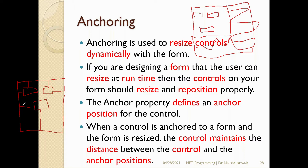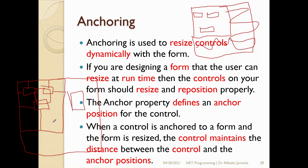Now the controls will not shift from their anchored positions. Each control is anchored on a specific edge: the label on top-left, the text box on top-right, and the button on the bottom. So now when I resize the form, the controls will maintain the distance from their anchor positions and adjust accordingly. The label will come here, the text box control will come here, and the button control will come here.